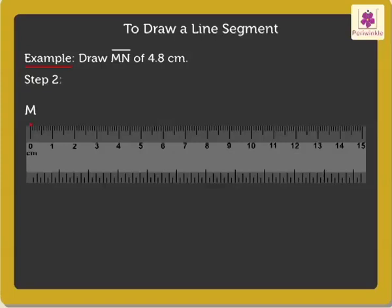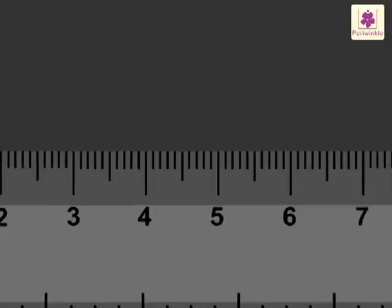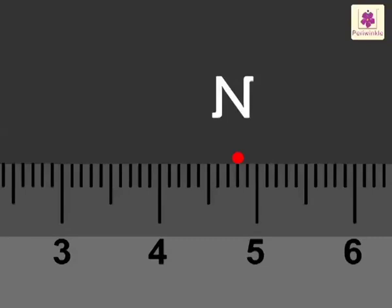Step 2: Next, mark point N such that it coincides with the eighth division after the four centimeter mark on the ruler.